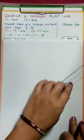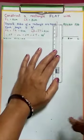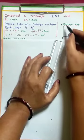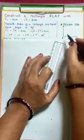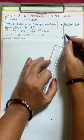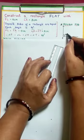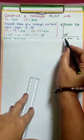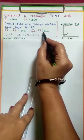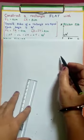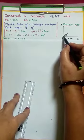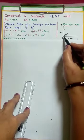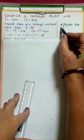Next, angle F is 90 degrees — we have to construct. Draw FX ray such that angle XFL is equal to 90 degrees. Now FL adjacent side gives 3 cm, so we have to take FT = 3 cm. Taking F as center, 3 cm radius, draw an arc which intersects FX ray at T.